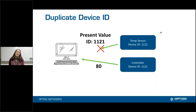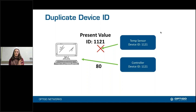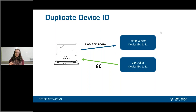So potentially it's trying to ask for the current temperature from the temperature sensor, but the controller responds. In this example, it might be asking for the present value of a specific object ID — maybe object ID 27. And the controller also has an object ID 27, and so it says the present value of object ID 27 is 80. The VMS is thinking the temperature is 80 degrees Fahrenheit, which is way too warm, so it's going to cool the room — but it thinks that's the temperature of the room where the temperature sensor is, so it cools a different room. Very likely that 80 isn't even a temperature — it may be some other unit or value.